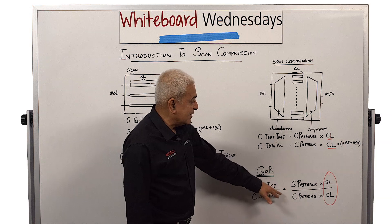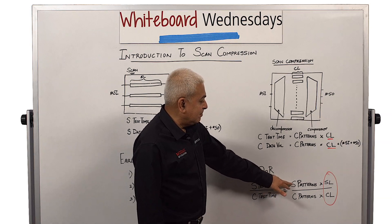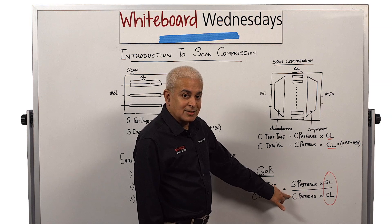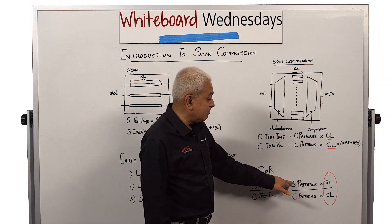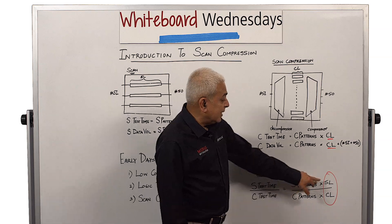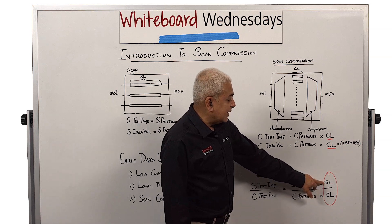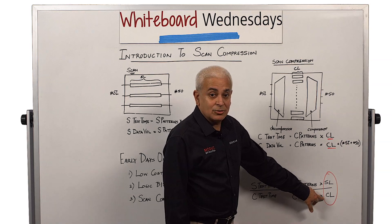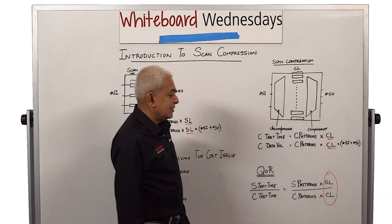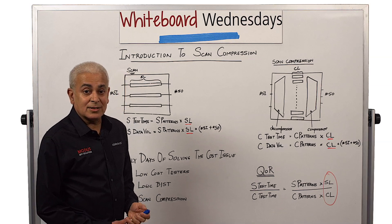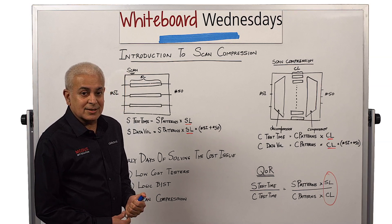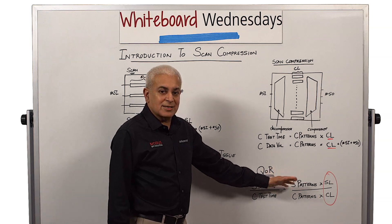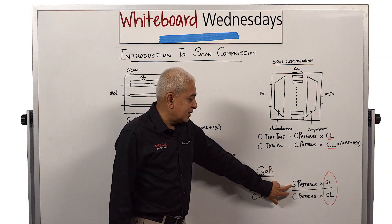The quality of results of scan compression are measured by the ratio of test time relative to scan test time. So if the scan time was 1,000 and now you've got it down to 10, you basically have 100x compression. And clearly you can see that in the equations. If the pattern counts remain the same — that is, when you test under compression, the same number of patterns are required compared to scan — then the ratio of scan chain length to the compressed chain length defines the amount of compression. And if the pattern count increases, your achieved compression is slightly lower because this ratio is not 1.